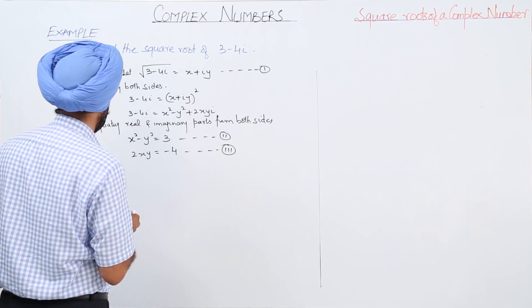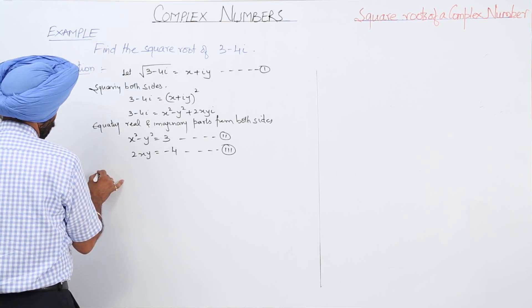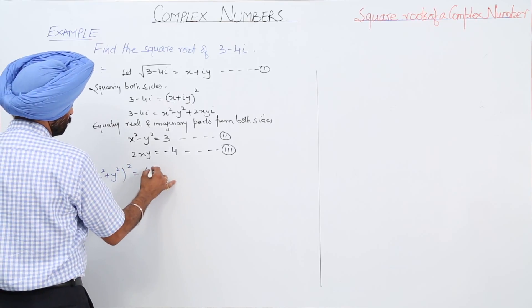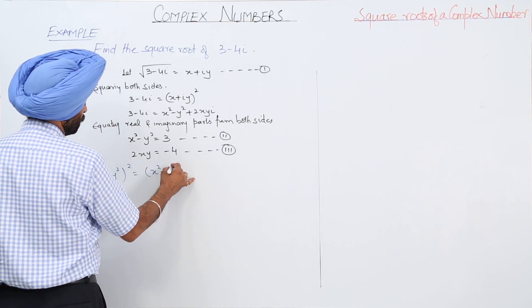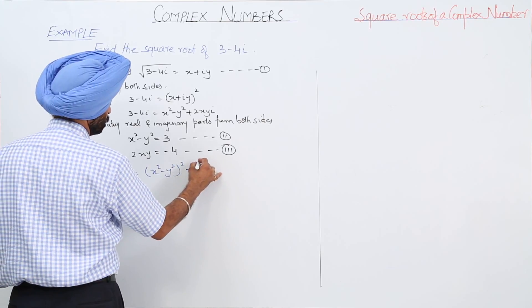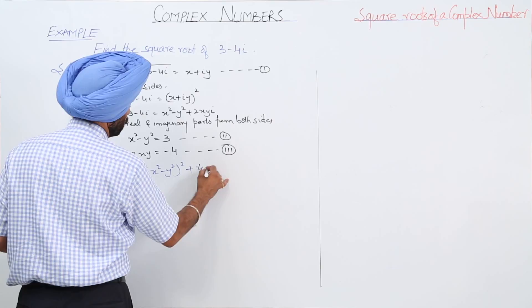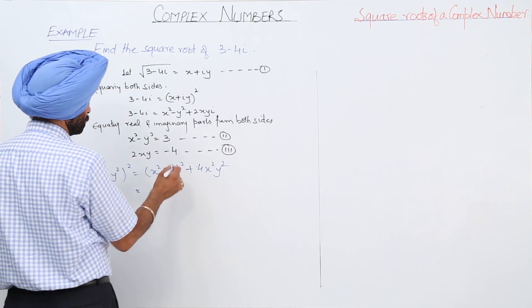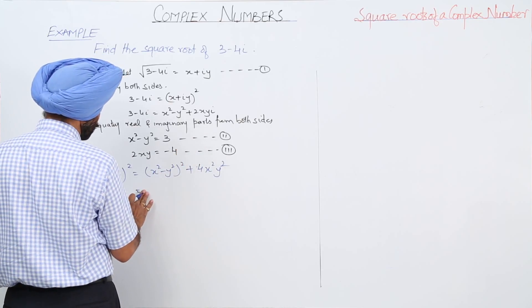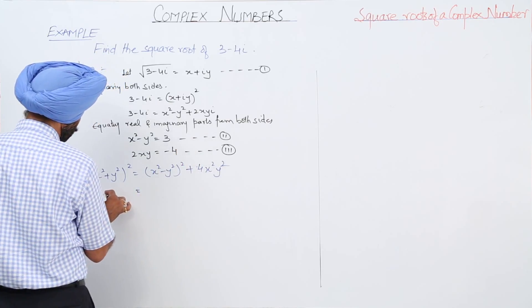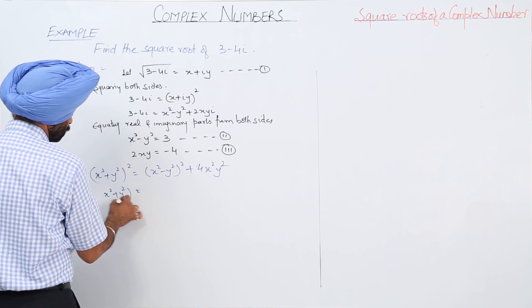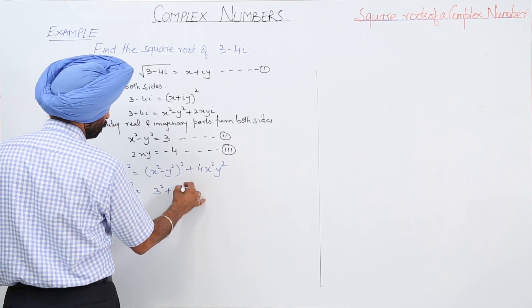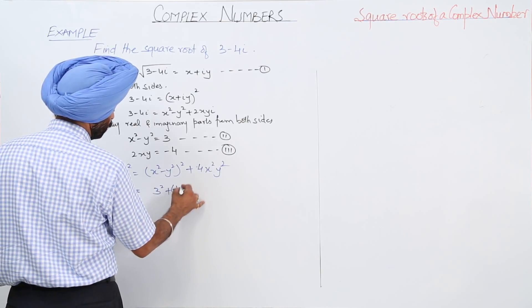Now, x squared plus y squared, whole squared, is equal to x squared minus y squared, whole squared, plus 4x squared y squared. Substituting the values from equations 2 and 3, we get x squared plus y squared, whole squared, is equal to 3 squared plus negative 4 whole squared.